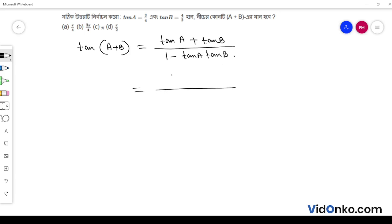Now, tan a is equal to 3 by 4. Tan b is equal to 4 by 3. So we have 3 by 4 plus 4 by 3, over 1 minus 3 by 4 into 4 by 3.